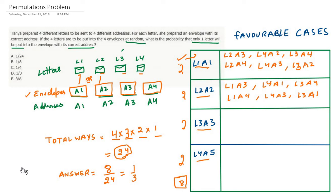If we put L1 into A1, we are left with three letters L2, L3, L4 and three envelopes A2, A3, A4 — but these three letters must not go into their corresponding envelopes. L2 can go only to A3 or A4. Let's say L2 goes to A3. Then L3 cannot go to A2, because if L3 goes to A2 then L4 would have only option A4, which is its correct address. So L4 goes to A2 and L3 goes to A4.